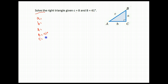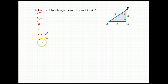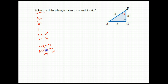Angle C is easy — it's the 90 degree right angle. From there, we can easily find angle A because the angles in a triangle add to 180. We have 90 taken up so far, so angles A and B in a right triangle add to be 90. So I get A plus 41 equals 90, and I subtract 41 from both sides. That tells me angle A is 49 degrees.